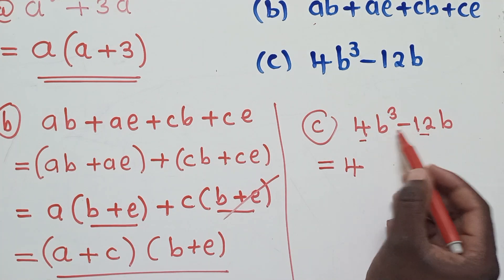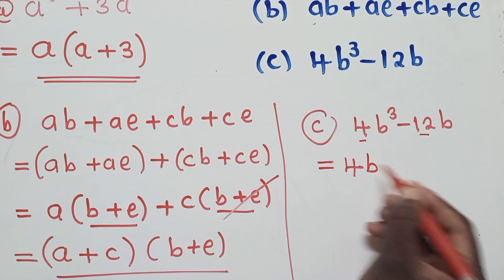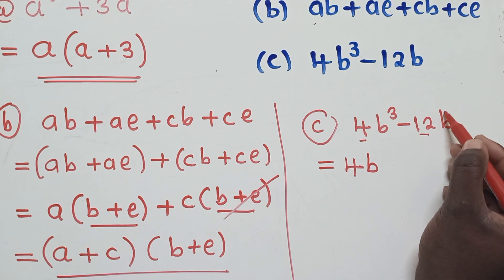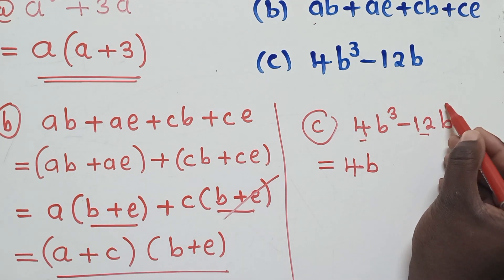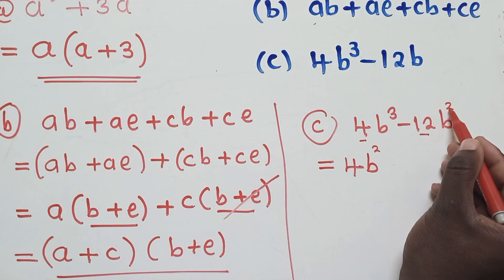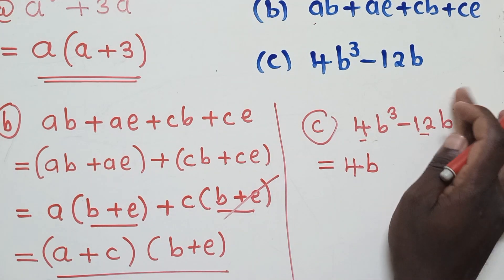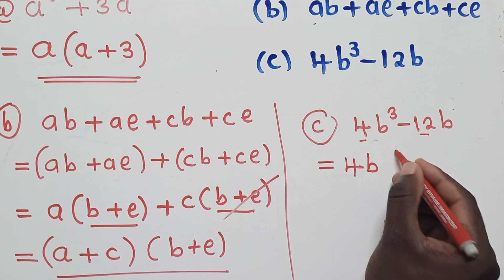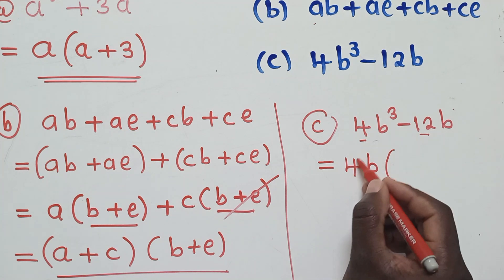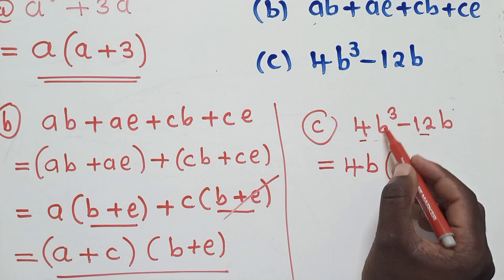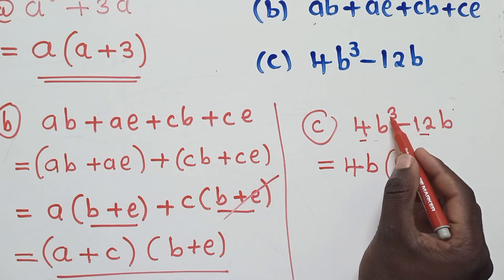We also check the letter common factor. We have b³ and b, so the common letter is b — we take the smallest degree, which is b (power 1). We write 4b outside the bracket and open the bracket. 4 into 4 is 1, so the first term inside becomes b².